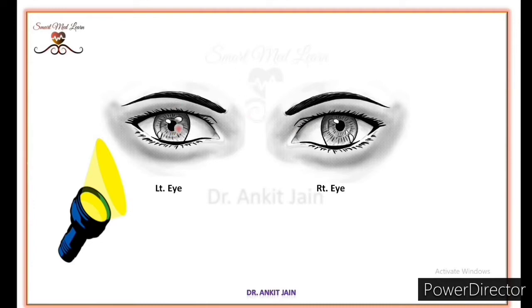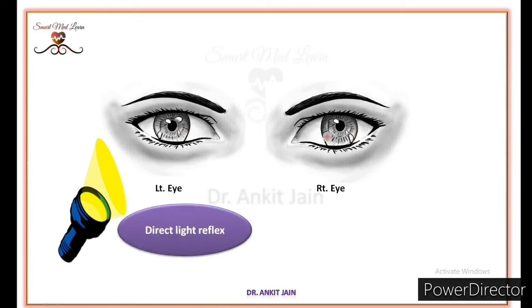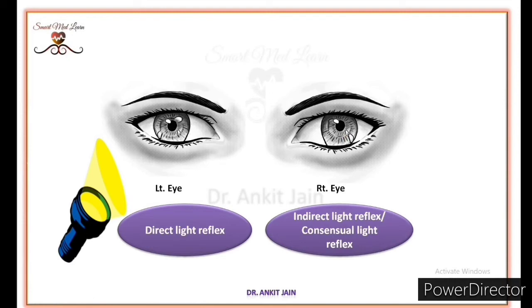The constriction of the eye on which the light is flashed we call Direct Light Reflex. And when the other eye's pupil also constricts, we call this Indirect or Consensual Light Reflex.